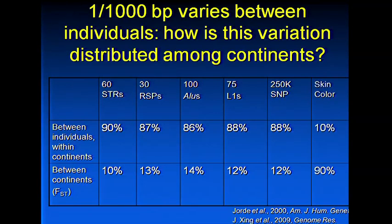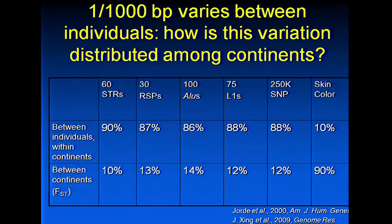We can compare that with FST for an observable trait — skin color. For skin color, 90% of variation occurs between continents, because there is substantial between-continent difference in this trait. Skin color has been highly selected in populations across different climates and latitudes. It's interesting to look at the contrast between variation for this observable trait and variation for actual DNA sequences, where variation is much less differentiated across large series of genes.